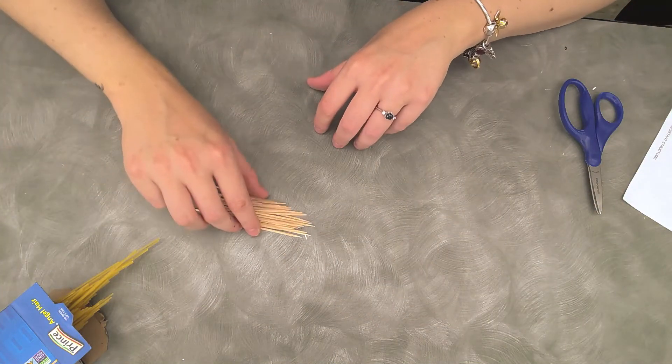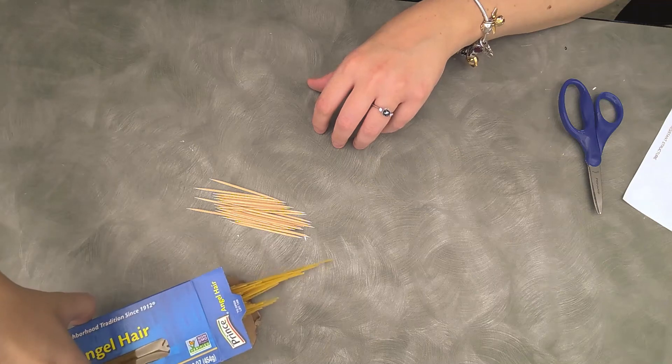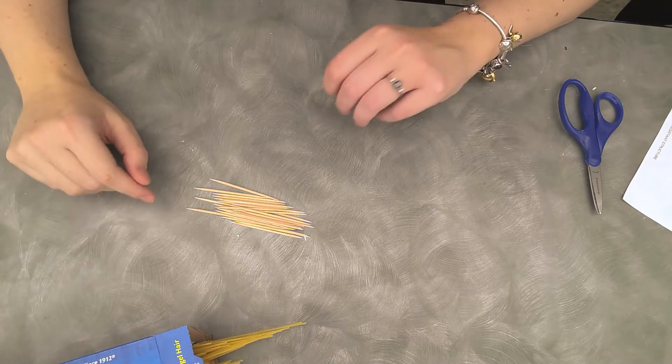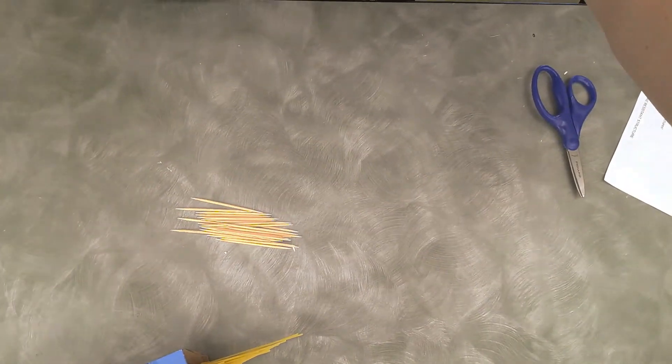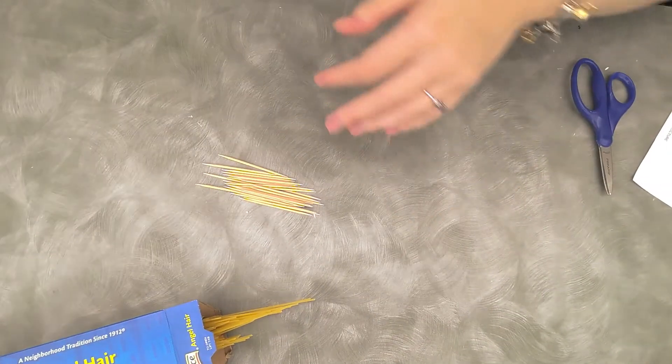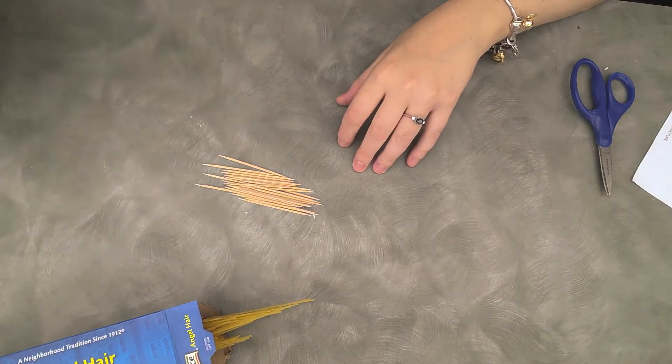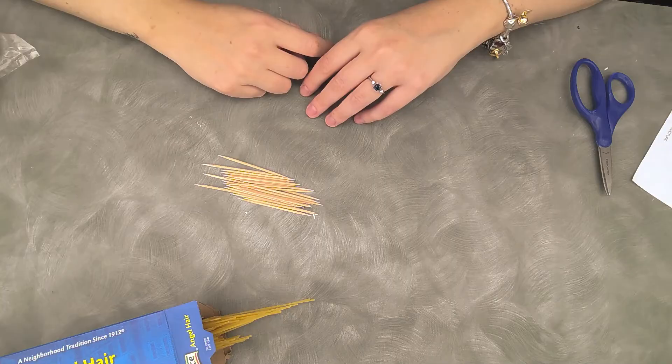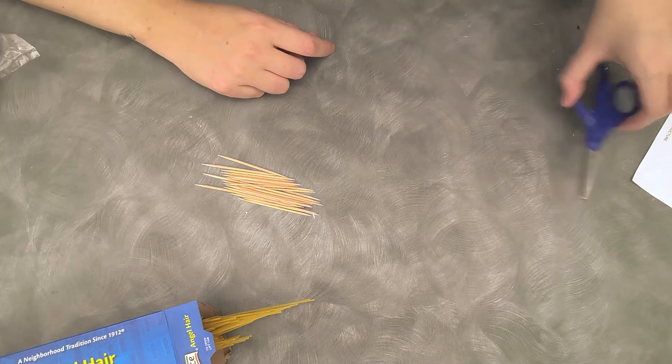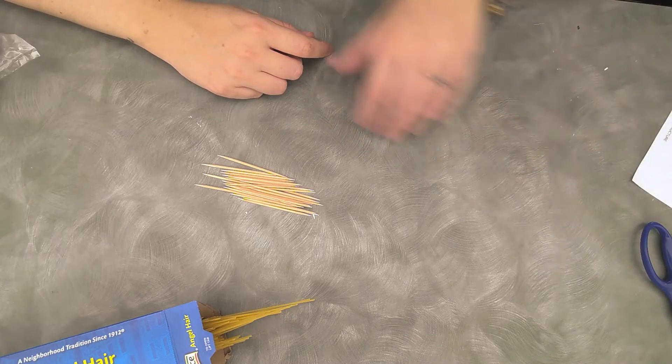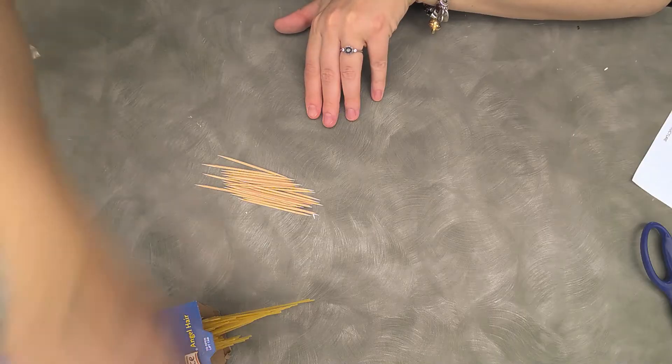You can use toothpicks or pasta. I'm going to do both because I think it'd be fun to see how the different height makes a difference. And you're going to need some marshmallows. You may also want a pen and paper just to design your ideas, scissors, and some tape.